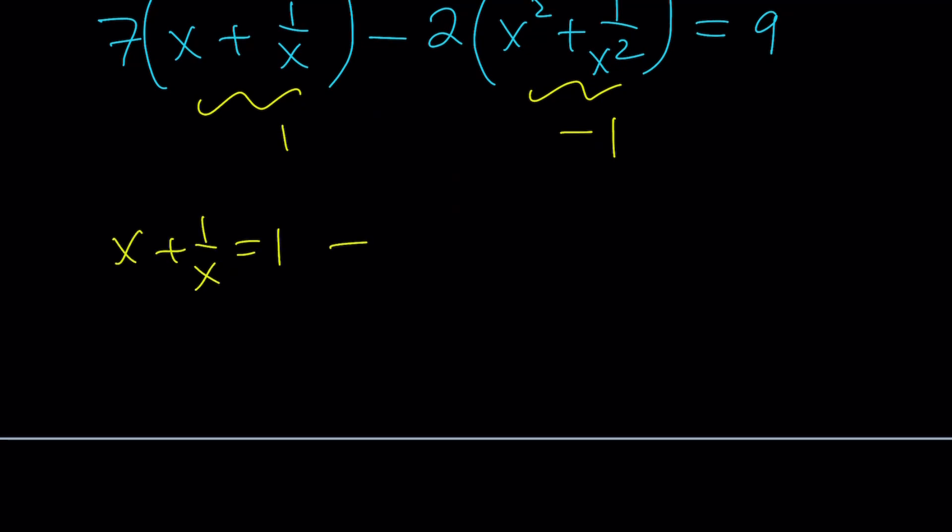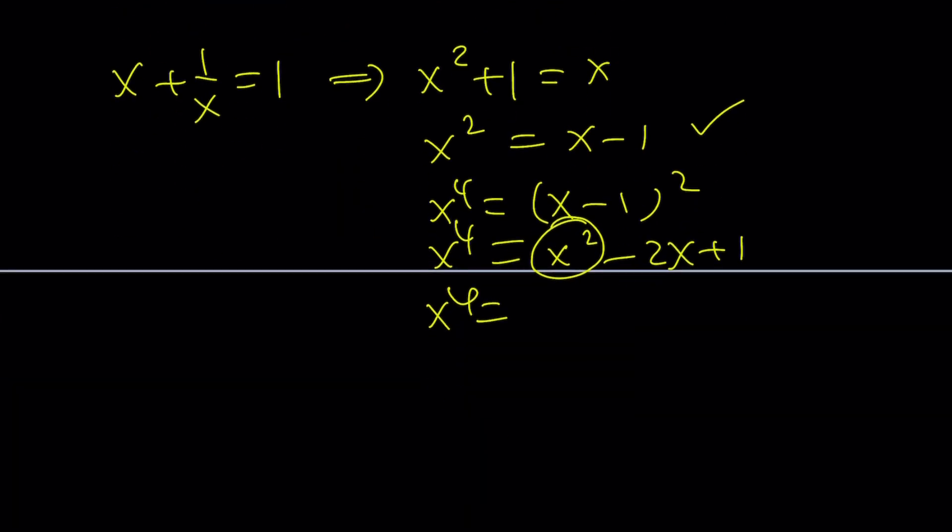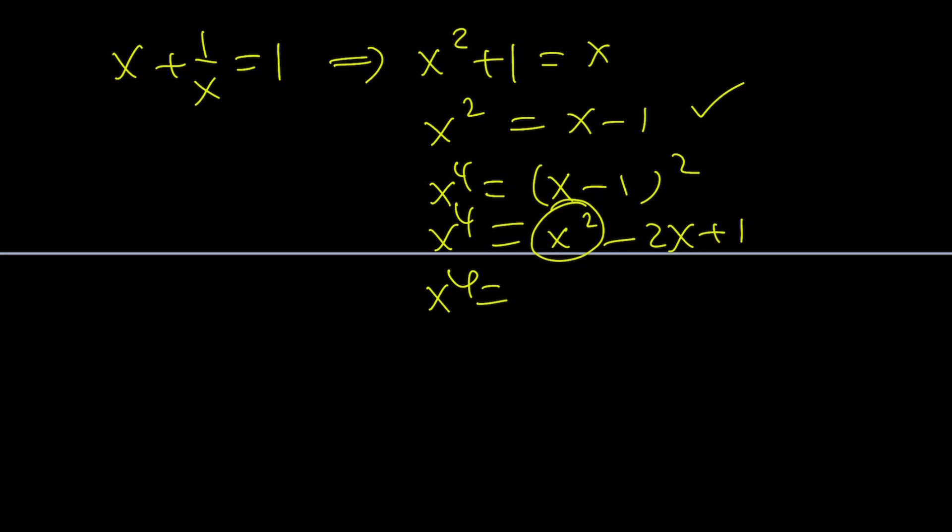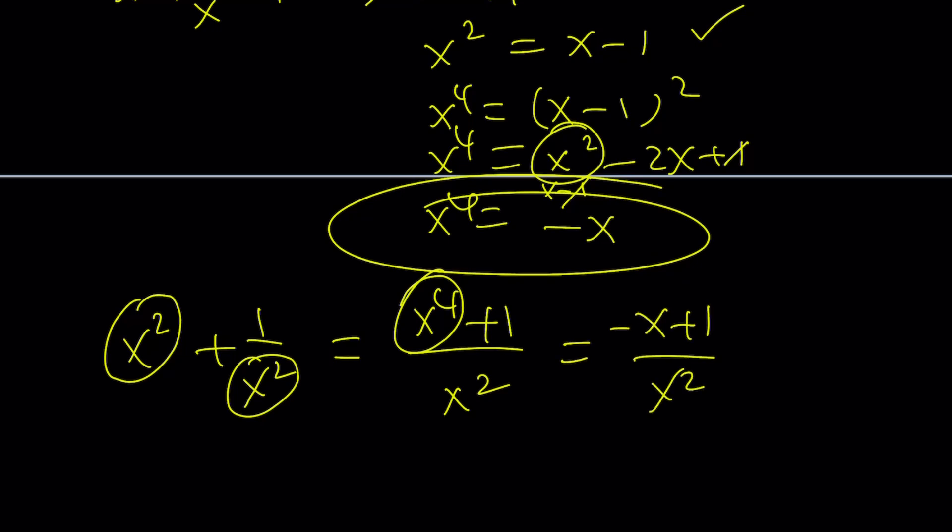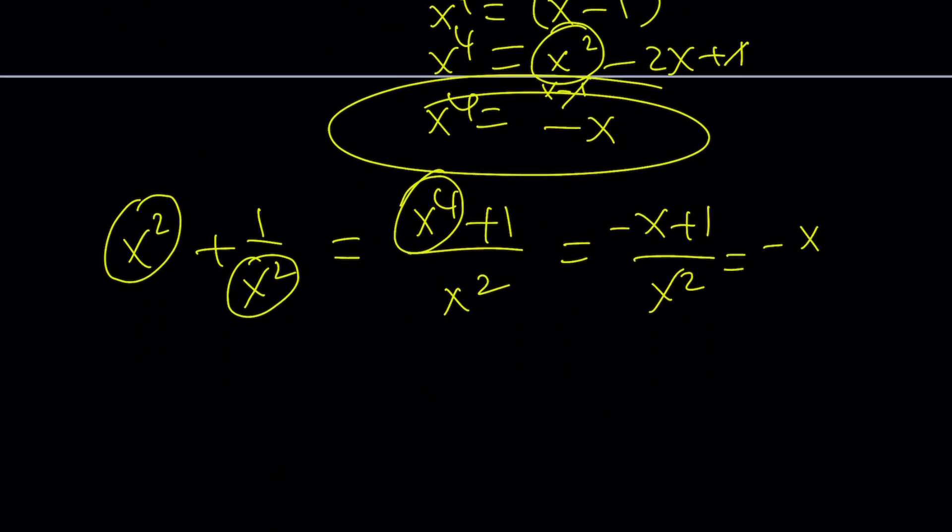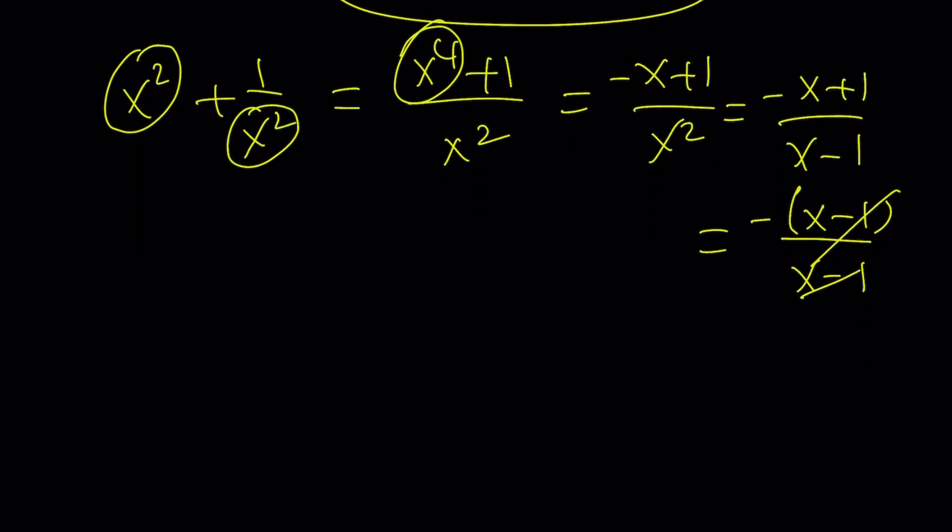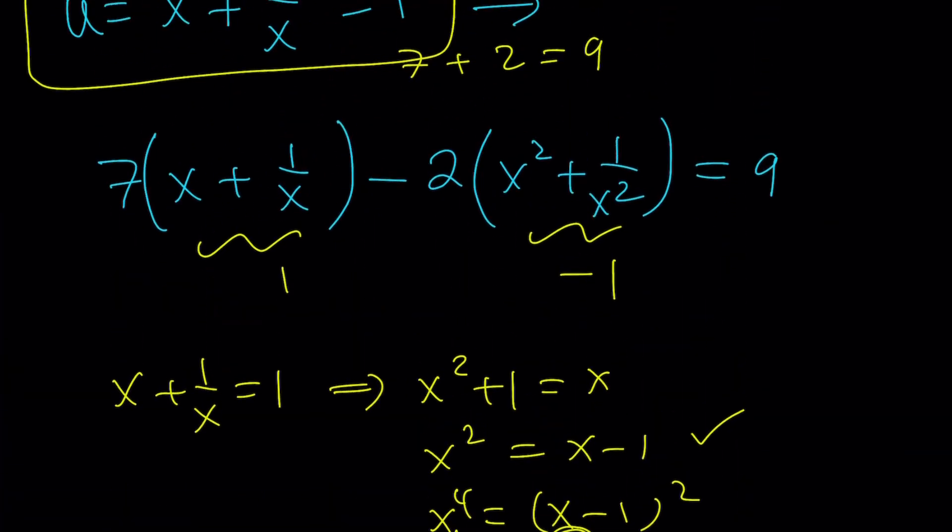If x plus 1 over x is equal to 1, then x squared plus 1 is equal to x, or x squared is x minus 1. What about x to the fourth power? Square both sides. x to the fourth becomes x squared minus 2x plus 1, but x squared is always x minus 1. So we get x minus 1 minus 2x plus 1. 1 cancels out, we end up with negative x. So x to the fourth can be replaced with negative x. Make a common denominator and then replace x to the fourth with negative x: negative x plus 1 over x squared. But also remember to replace x squared with x minus 1: negative x plus 1 over x minus 1. And guess what? This is negative 1. If x plus 1 over x is 1, then x squared plus 1 over x squared is negative 1. Therefore, it works.